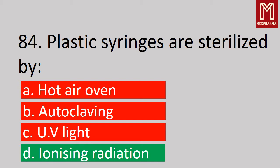Next question, plastic syringes are sterilized by — correct answer, Option D: Ionizing radiation.